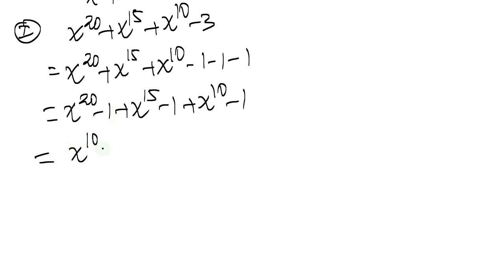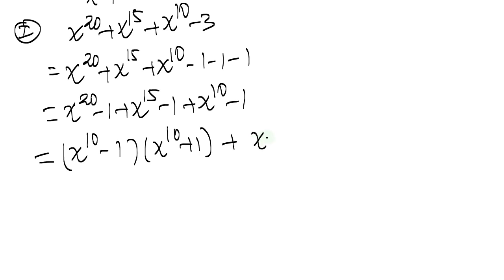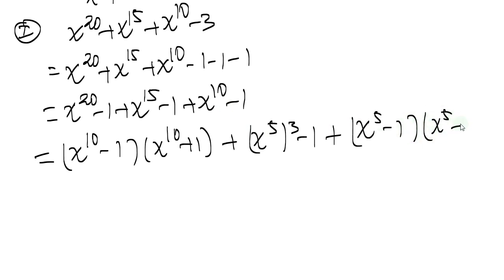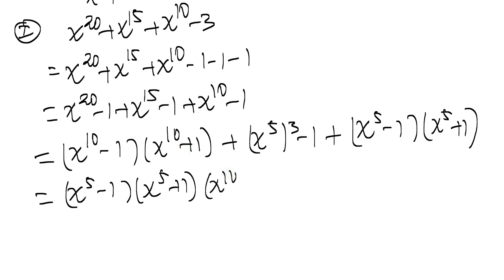Now I'm going to factor each term. x to the 20 minus 1 can be written as (x to the 10 minus 1)(x to the 10 plus 1). And x to the 15 minus 1 factors as (x to the 5 minus 1)(x to the 5 plus 1)(x to the 10 plus 1). Similarly, x to the 10 minus 1 is (x to the 5 minus 1)(x to the 5 plus 1).